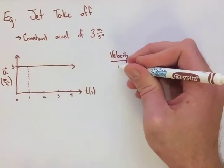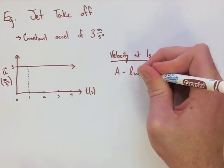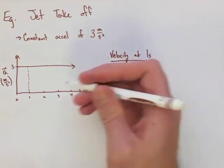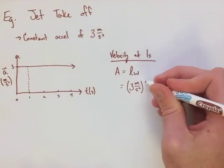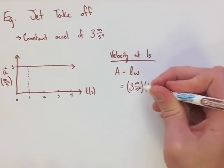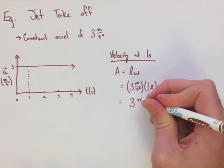We're going to, in each case, use length times width. In the first case, we're going to use 3 meters per second squared times 1 second. This, of course, equals 3 meters per second.